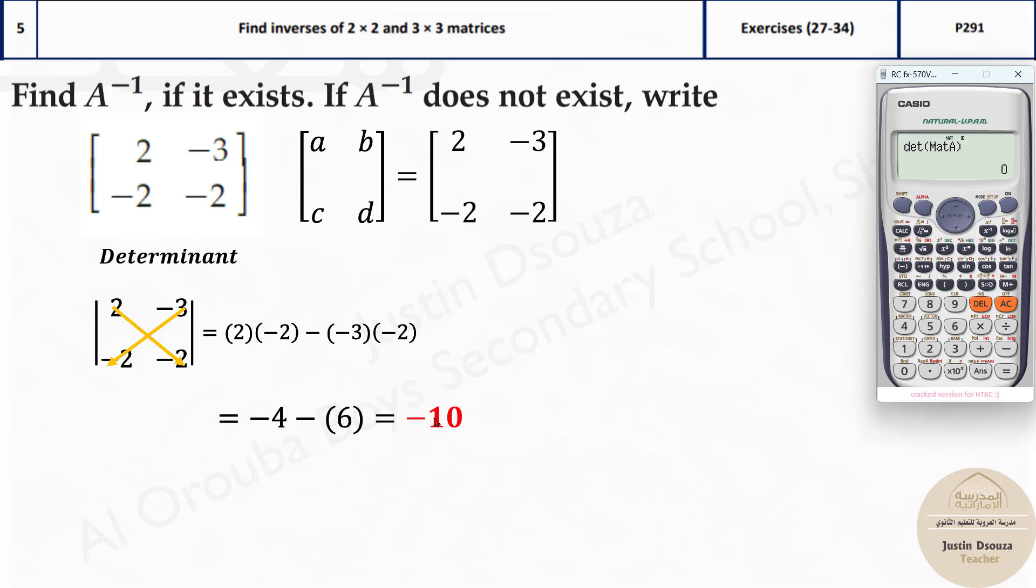You get the answer over here as minus 10. And if the determinant is anything other than 0, you will get an inverse. Now the formula for inverse is 1 by determinant and there is D. See this one swaps, shifts over here.